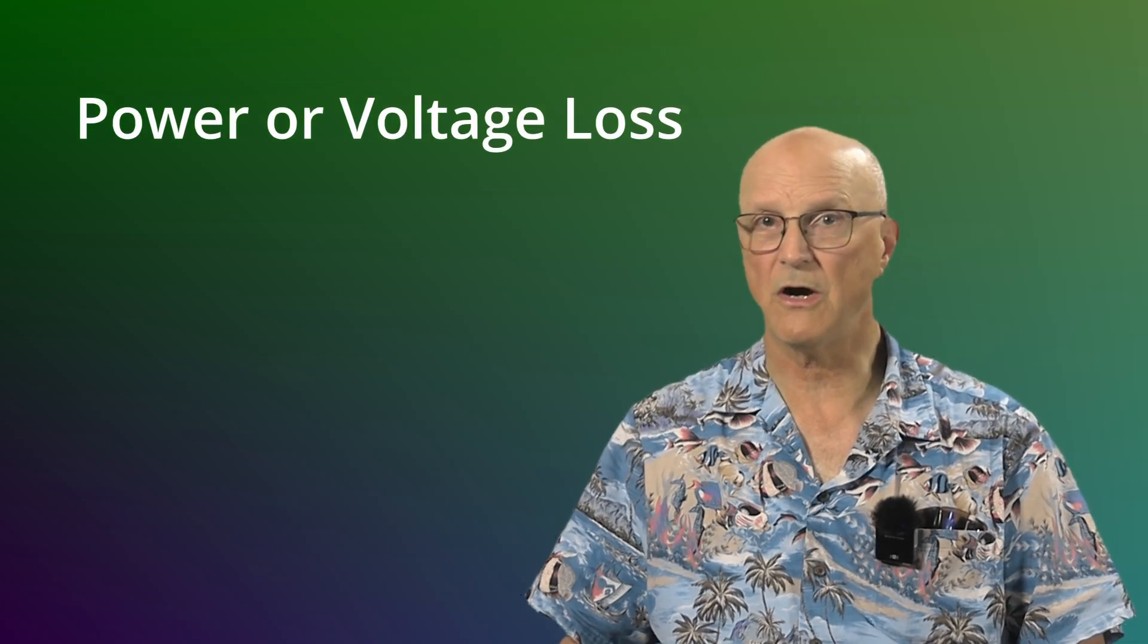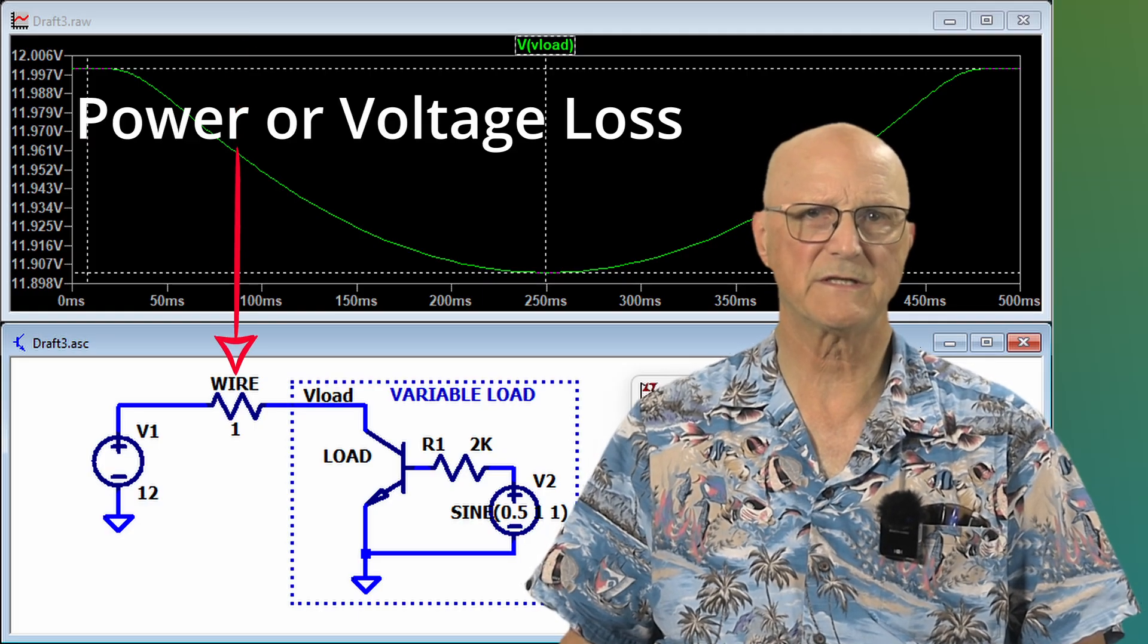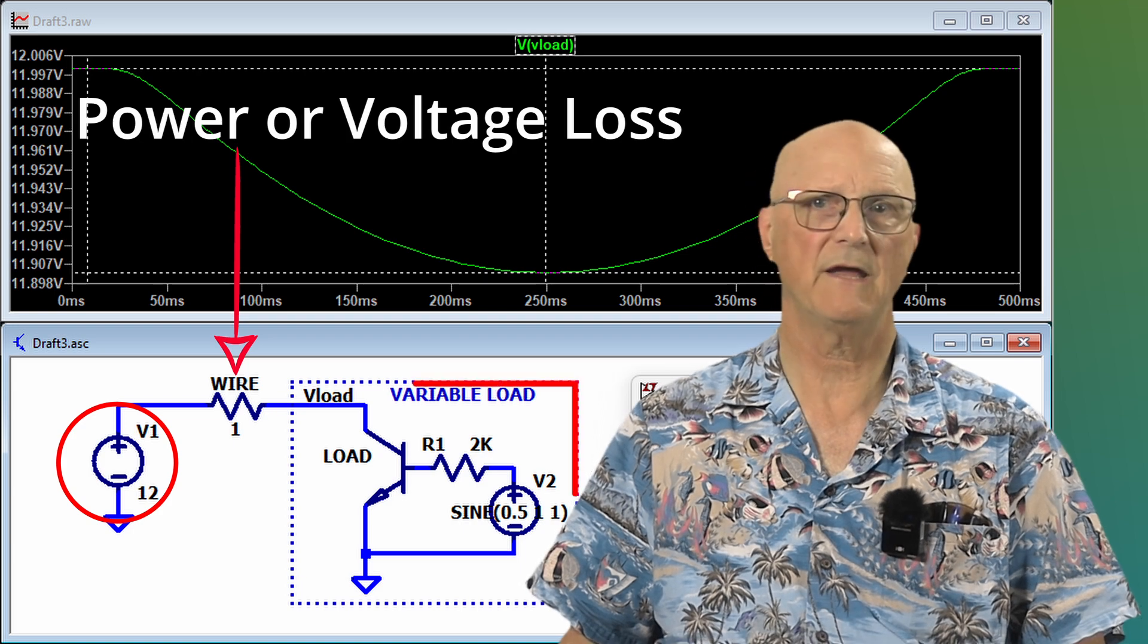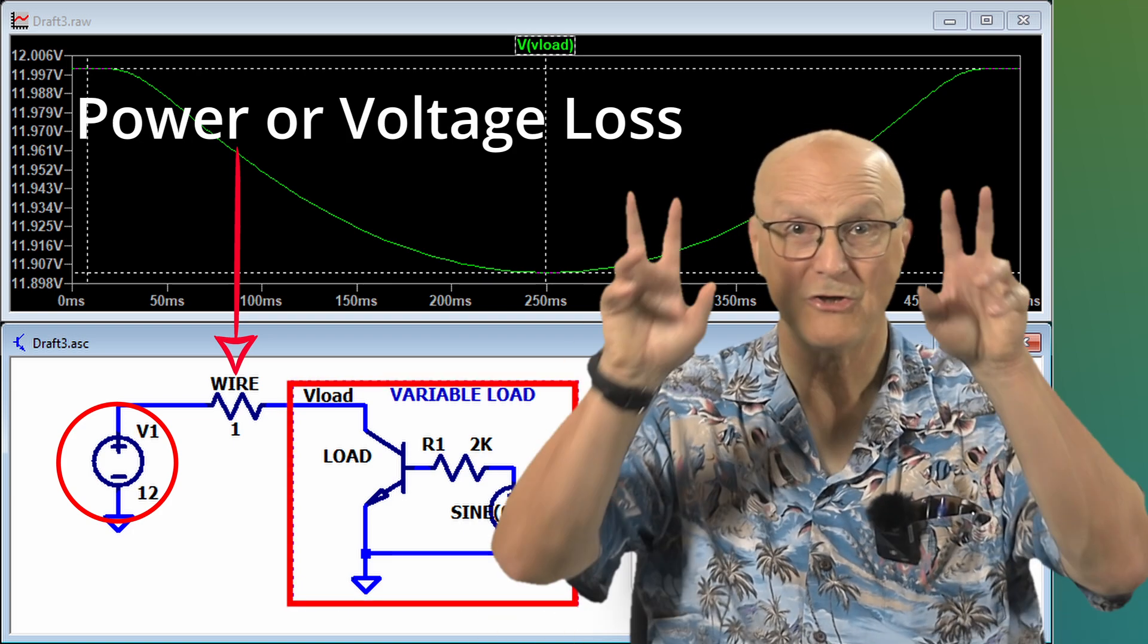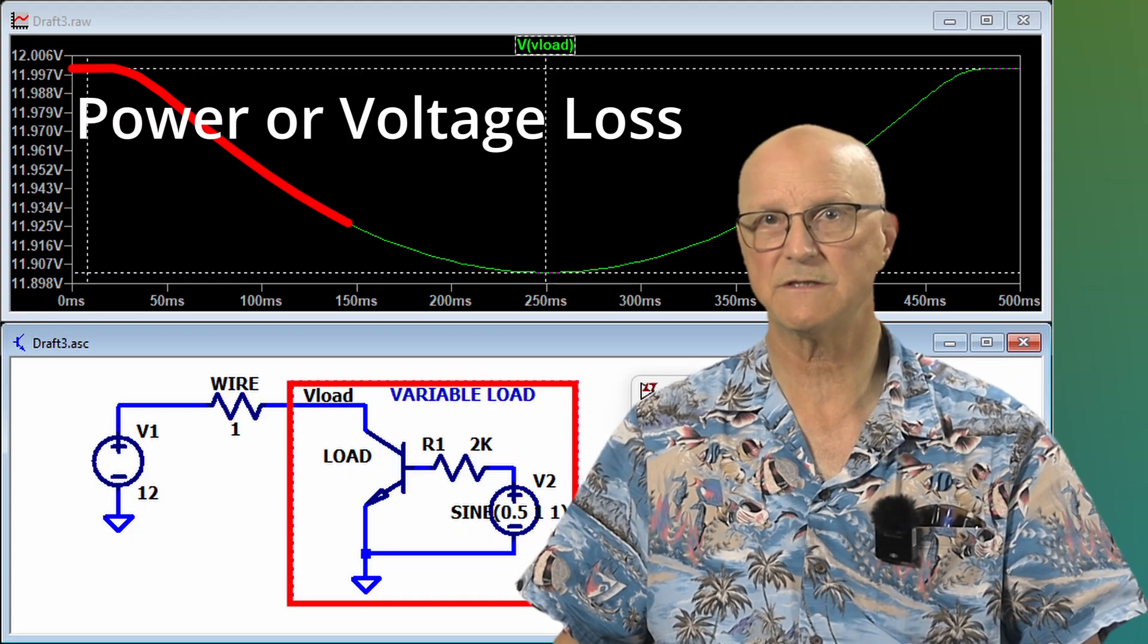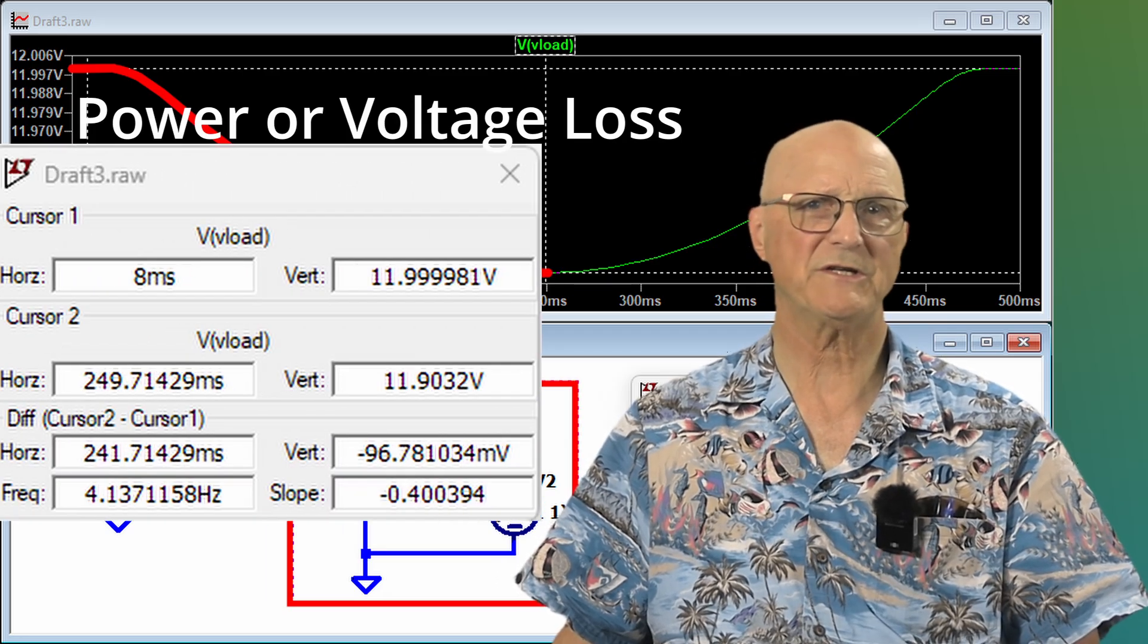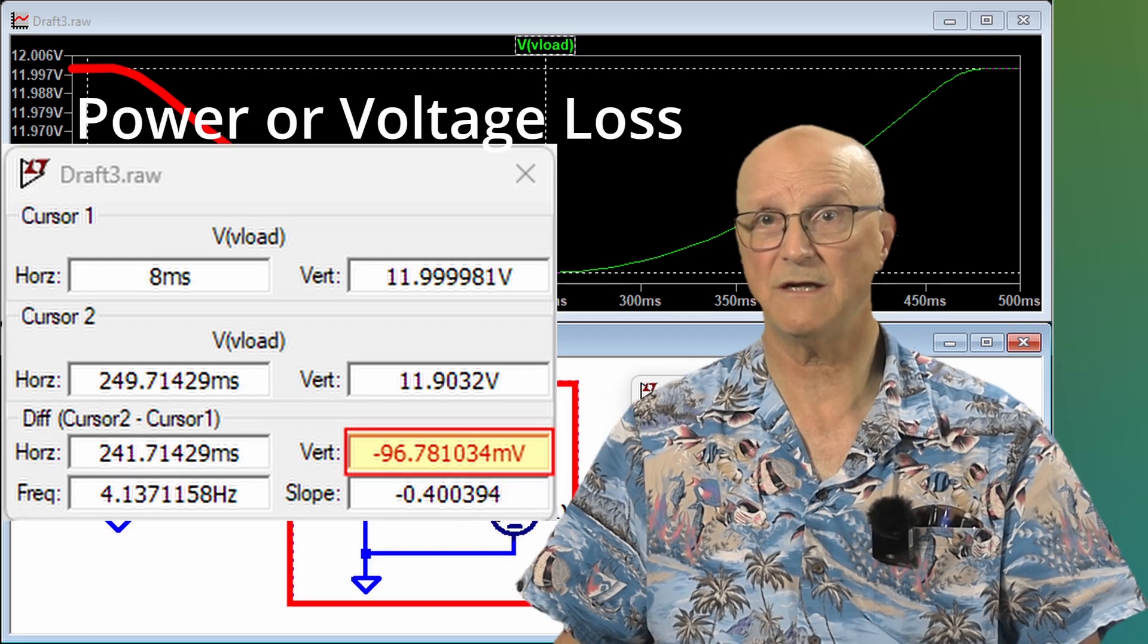Another consideration is power or voltage loss. Remember, a wire is just a low-value resistor you are putting between your power or signal source and the load. Too much resistance yields what I call squishy voltages. As the load increases, the voltage at the load end of the wire decreases due to the voltage drop of the wire itself. So the question is, how much variation in voltage at the load can you tolerate?